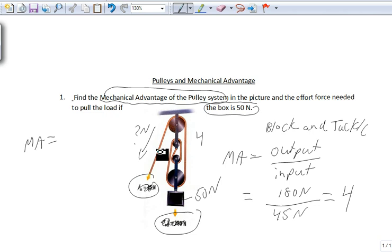Don't count a rope if you're pulling on it down. So 1, 2, 3, there are 4 ropes helping hold up this load. So the MA is 4.